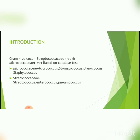The gram-positive cocci can be broadly classified into streptococci and micrococci based on the catalase test. Streptococci is catalase negative and micrococci is catalase positive. Micrococci, which is catalase positive, consists of micrococci, stomatocococci, planococcus, and staphylococci. We have already discussed staphylococci in our previous video. The streptococci, which is catalase negative, consists of streptococci, enterococci, and pneumococci.